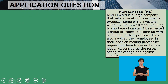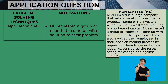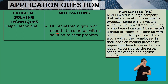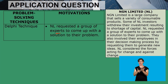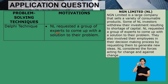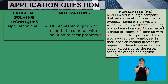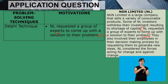Here are the three techniques I've identified. The first one is the Delphi technique. The motivation: 'NL requested a group of experts to come up with a solution to their problem.' Remember, the minute you see the word 'experts,' Delphi should come to mind. This is taken directly and word for word from the scenario — nothing was added, nothing was taken out.